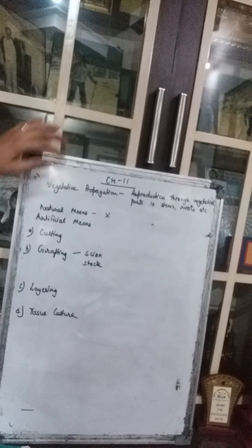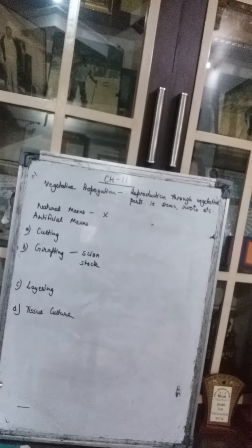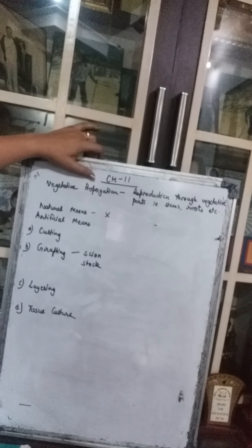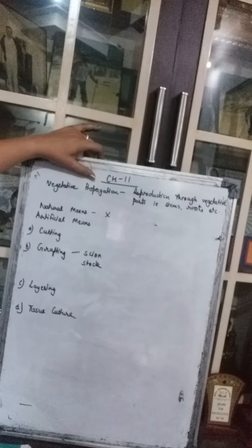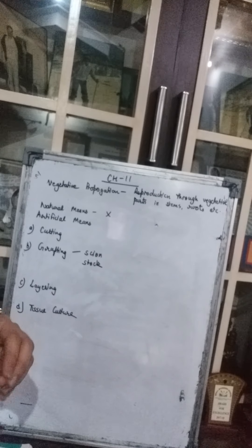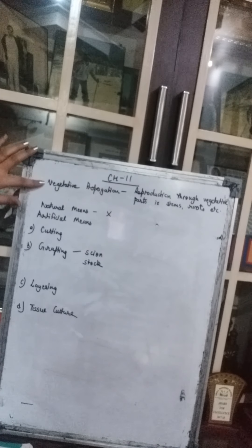Good morning. We are in continuation of Chapter 11, which is Reproduction in Plants. Today we will discuss vegetative propagation. As I told you in our earlier video, vegetative propagation means reproduction in plants through vegetative parts — roots, stems, etc. — through which new plants are produced.